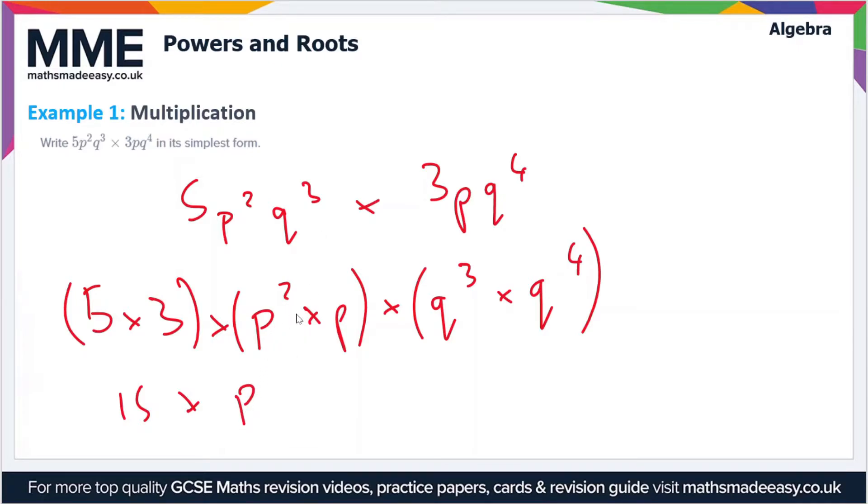We use the multiplication law here to add the powers. So p is just p to the power 1, so p² times p is p³. And then we have q³ times q⁴, so again we add the powers, so we get q³⁺⁴ which is q⁷. So the simplified expression then is 15p³q⁷.